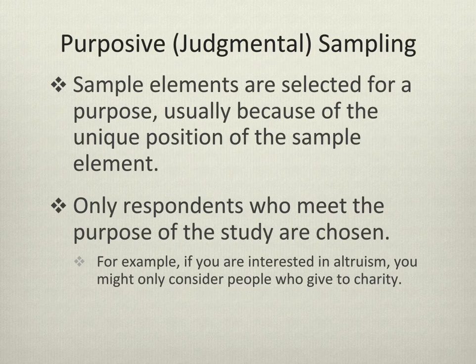With purposive or judgmental sampling, I'm selecting elements because of their unique position. I'm asking people to participate in my survey because they meet a very explicit criterion that's probably tied into my theory. For example, if I'm interested in altruism, I might only ask people to participate if they've given to charity — I'm screening based on some sort of criterion. This is different from quota sampling: with quota sampling, I'm trying to represent something in proportions relative to the larger population; with judgmental sampling, I'm only taking a certain group of people.